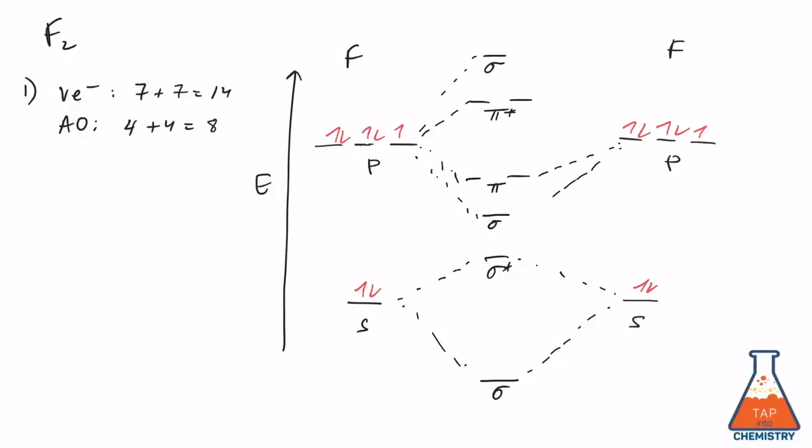The usual order of these MO orbitals is sigma, pi, pi-star, and sigma-star. However, when a boron, carbon, or nitrogen is one of the atoms in the molecule, then the order of the first two molecular orbitals switches and becomes pi, sigma, pi-star, sigma-star.